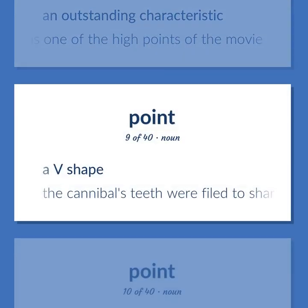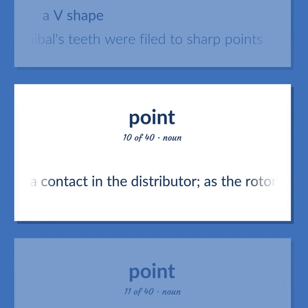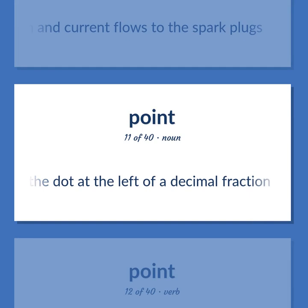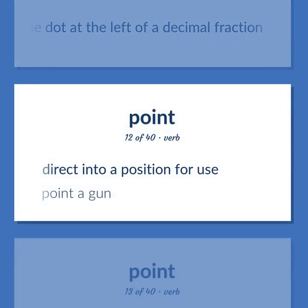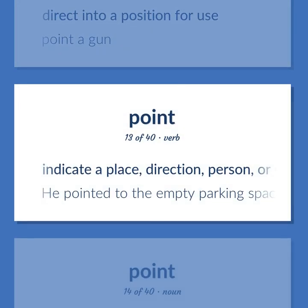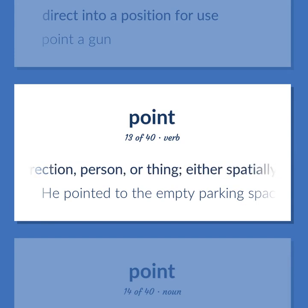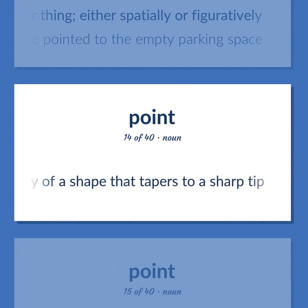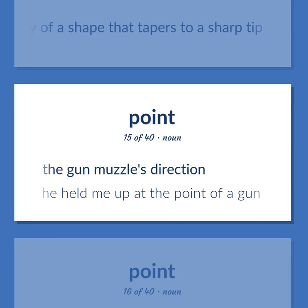A V shape — the cannibal's teeth were filed to sharp points. A contact in the distributor — as the rotor turns, its projecting arm contacts them and current flows to the spark plugs. The dot at the left of a decimal fraction. Direct into a position for use — point a gun. Indicate a place, direction, person, or thing, either spatially or figuratively. He pointed to the empty parking space. The property of a shape that tapers to a sharp tip. The gun muzzle's direction — he held me up at the point of a gun.